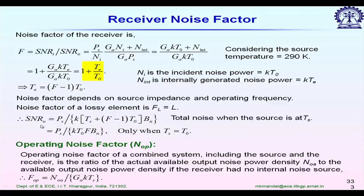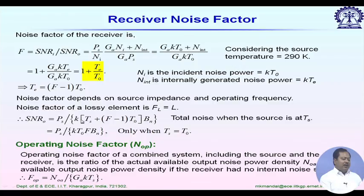Now let us consider an input temperature T_s instead of the standard value 290 Kelvin, and see what happens to SNR. The SNR at the output is equal to P_s divided by k(T_s + (F-1)T_0) times B_n. The first term is due to the source temperature T_s, and the second term is due to the effective noise temperature T_e. If T_s equals T_0, then SNR at the output simplifies to P_s / (k T_0 F B_n).